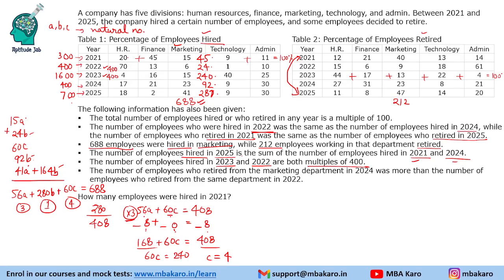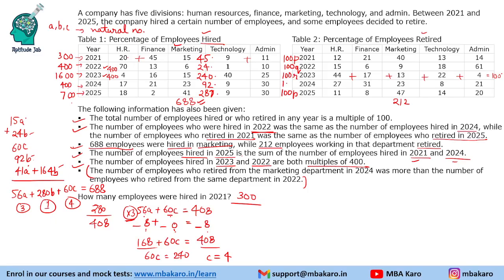The number of employees hired in 2021 is 300 — that is our answer. Now let us do the retired part. Since retired 2021 and 2025 are the same, we take those as 100P each. For the other years, we use variables 100Q, 100R, 100S for 2022, 2023, and 2024 respectively.